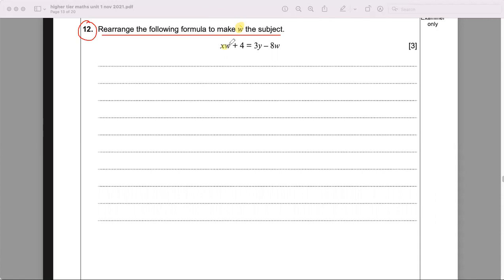So w here, you need to be able to make that w on its own on the left hand side, and the rest of them should be on the right hand side. At the end, your answer should be w equals something, and this bit here, w has to be on its own.